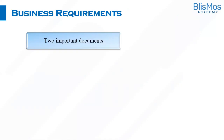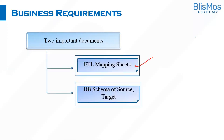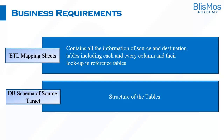As with other projects, there will be a Business Requirement Document, Software Requirement Specification, or Product Requirement Document. The same applies to a data warehouse project as well. But there are two documents which are very important as part of the BRD in data warehouse: first is the mapping document, also called the mapping sheet, and the second is a document that consists of the schema for the source and target.